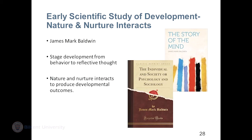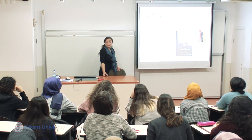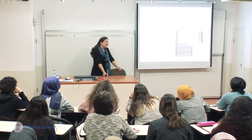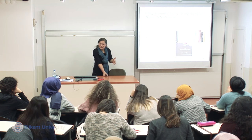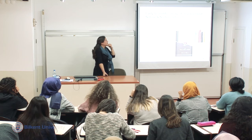James Mark Baldwin, according to your book, is one of the underrated theorists of the time. He was a proponent of the idea that nature and nurture interact to produce developmental outcomes — we can't rely on one alone to explain child development. He also gave a lot of credence to the child as an active meaning-maker: the child is not passive, not simply absorbing stimuli, but actively making meaning, with the environment either supporting or hindering that process.